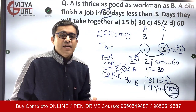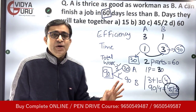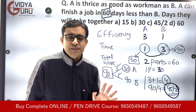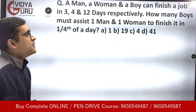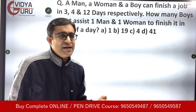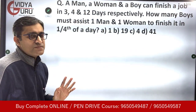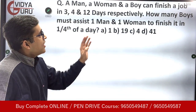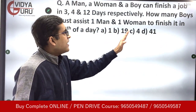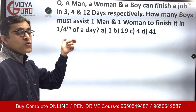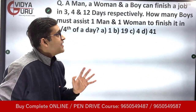Now let's use the same approach for the next question. I have not assumed any x or y — no variables have been assumed. A simple, short method. Now the level of difficulty is increasing. A man, a woman, and a boy can finish a job in 3, 4, and 12 days respectively. How many boys must assist one woman and one man to finish the work in one-fourth of a day?